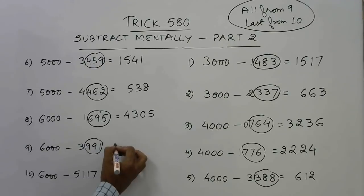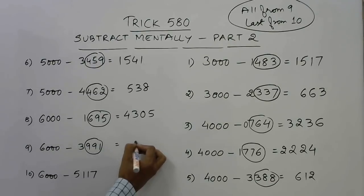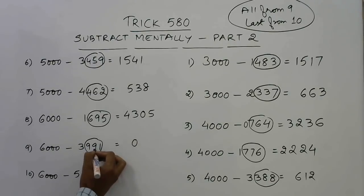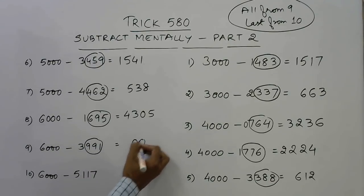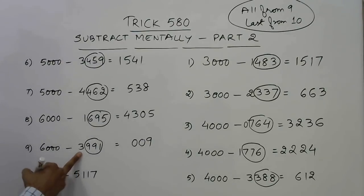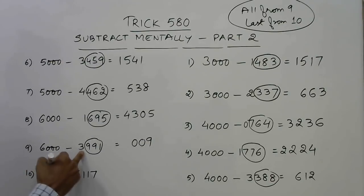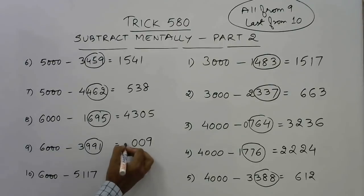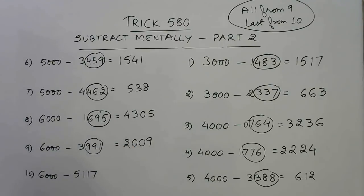Next, 5000 minus 991. Last three digits 991: 9 minus 9 is 0, 9 minus 9 is 0, 10 minus 1 is 9. Increase the leading digit 0 by 1 to get 1, and 5 minus 1 is 4. Wait — increase gives 4, so 6 minus 4 is 2, and the answer is 2009.